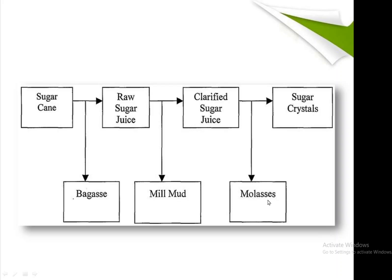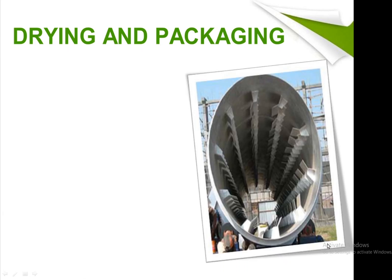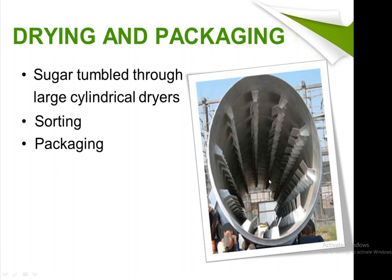Sugar crystals are further sent to sugar dryers where drying and packing are carried out. In this process, sugar tumbles through large cylindrical dryers where sorting and packing are also performed.